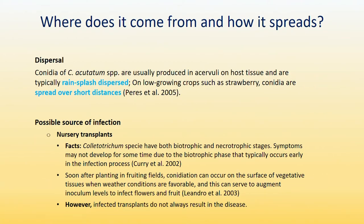Where does it come from and how does it spread? The conidia of Colletotrichum species are usually produced on the host tissue and are typically rain-splash dispersed. On low-growing crops such as strawberries, conidia are spread over short distances. A possible source of infection is nursery transplants. In fact, Colletotrichum species have both biotrophic and necrotrophic stages, so symptoms may not show up for some time due to the biotrophic stage. But soon after planting in the fruiting field, conidia can occur in the vegetative tissue and under favorable weather conditions serve as inoculum to infect flowers and fruit later in the season. Be mindful that not all infected transplants will result in disease — this depends on the level of inoculum, cultivar susceptibility, and weather conditions.